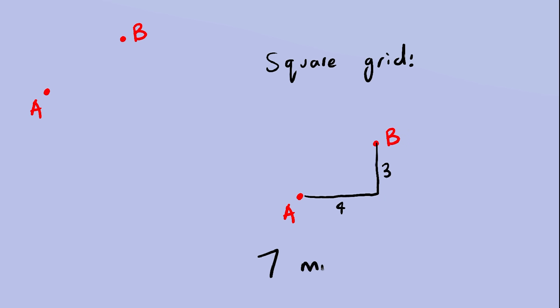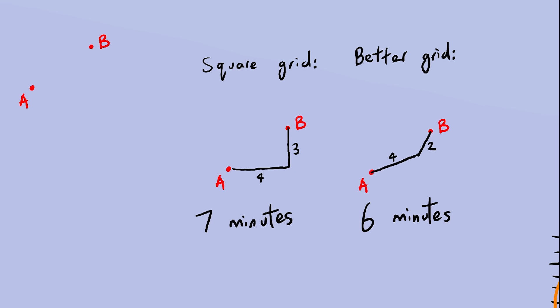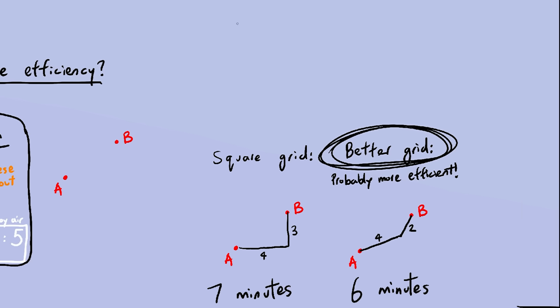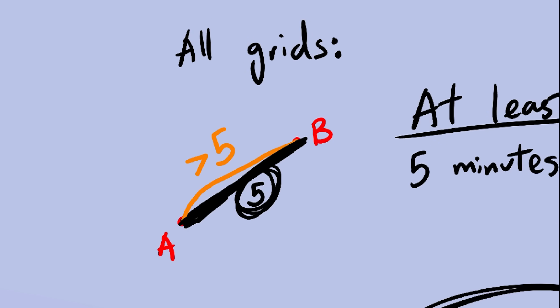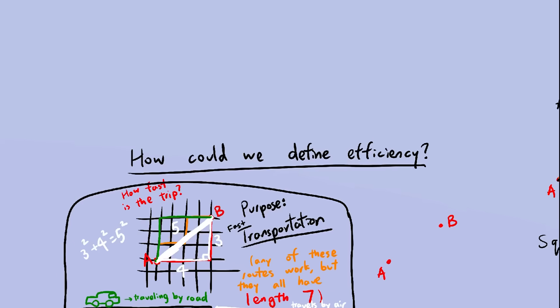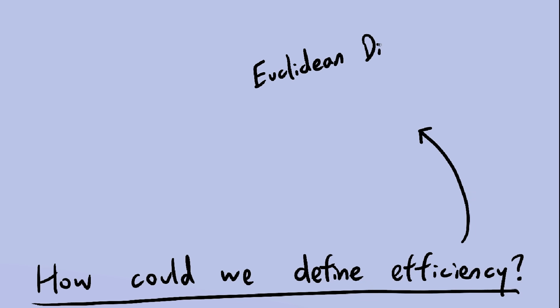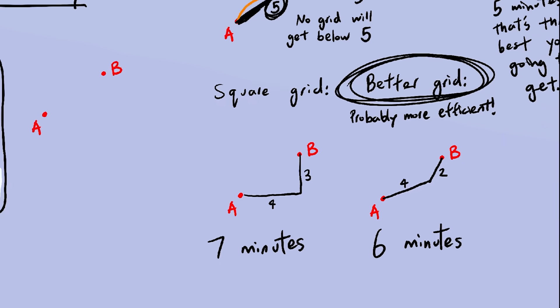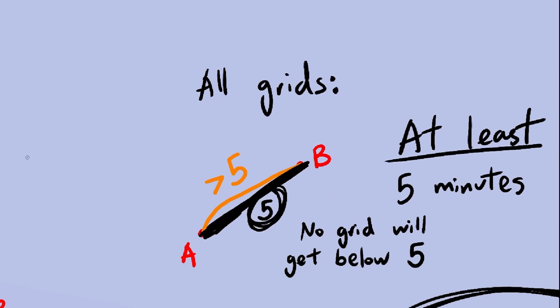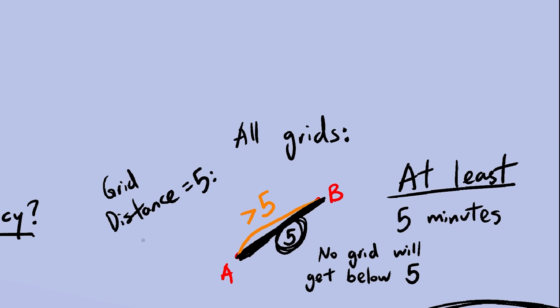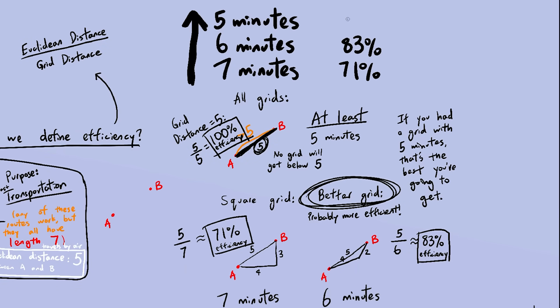For the square grid, the travel time is 7 minutes. Maybe for another type of grid, the travel time is only 6 minutes. In that case, we would consider that grid more efficient. But no matter what grid you have, the travel time will never be below 5 minutes. 5 minutes would be maximum 100% efficiency because you're never going to outrun the bird. The shortest path between two points is a straight line 5 blocks long, and it's impossible to get below 5 blocks. So here's our new definition of efficiency, one that doesn't involve reachable area. We divide the Euclidean distance by the grid distance. So for the square grid, the efficiency would be 5 over 7, 71%. For the slightly better grid where the travel time was 6 minutes, the efficiency would be 5 over 6, 83%. And for the maximum efficiency grid where there was a road directly connecting points A and B, the efficiency would be 5 over 5, 100%. Perfect. This matches up with what we want.